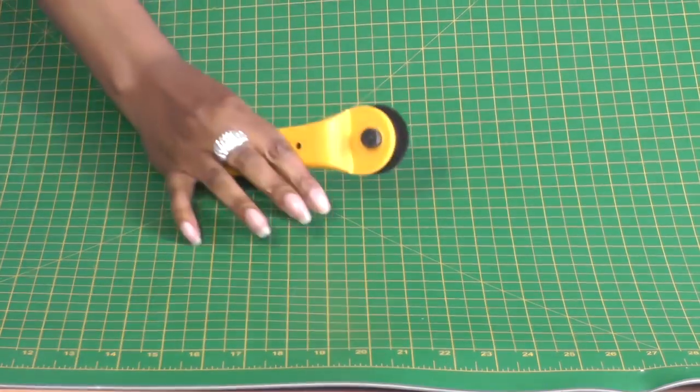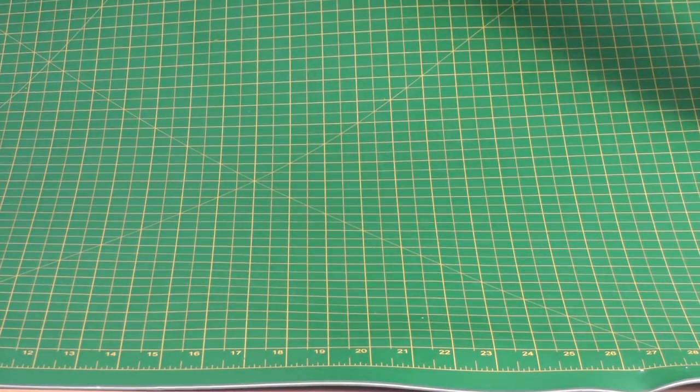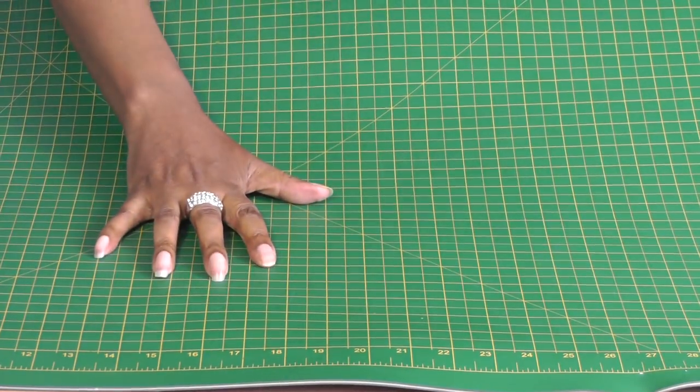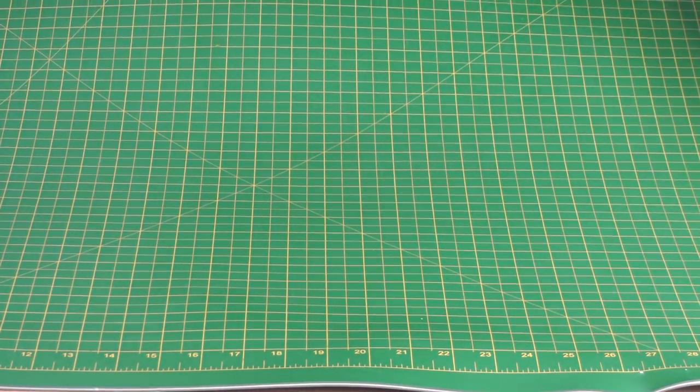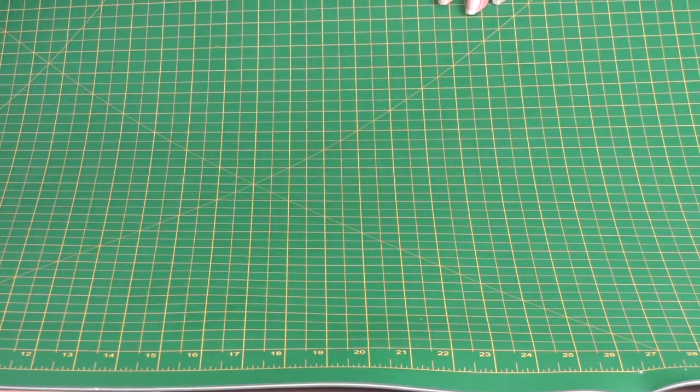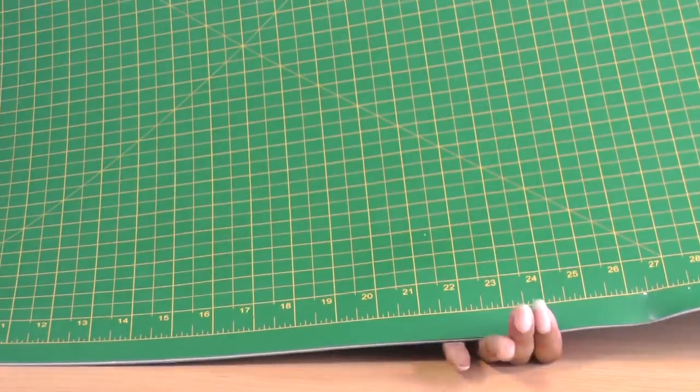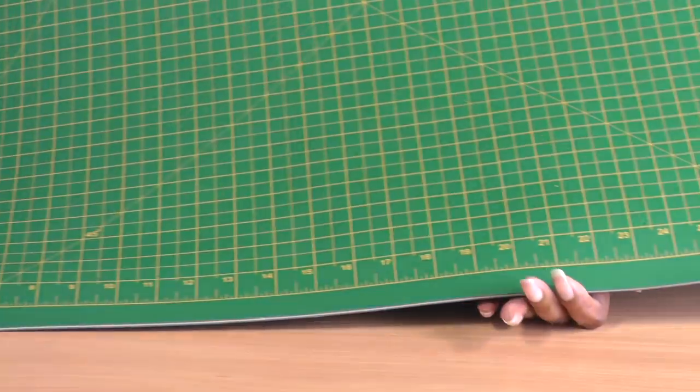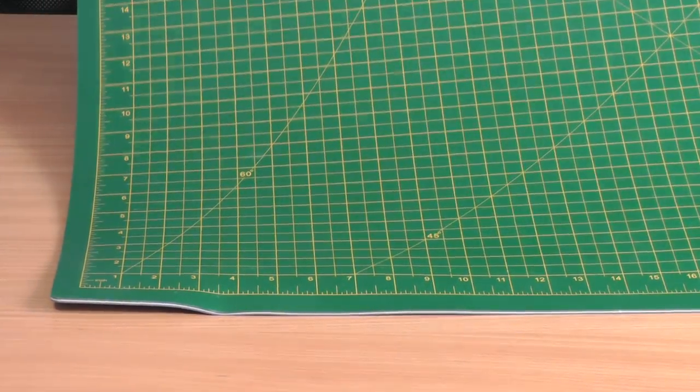That's the reason why I'm telling you do not use a blade unless you have a cutting mat under whatever it is you want to cut out. You can use it for your paper, can be on this. Your fabric can be on this as well. So with the mat, it's double-sided and what that means is there are measurements that are on this mat.